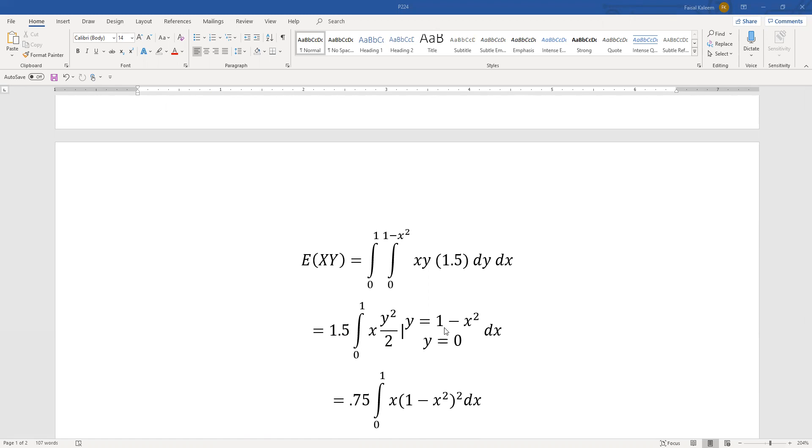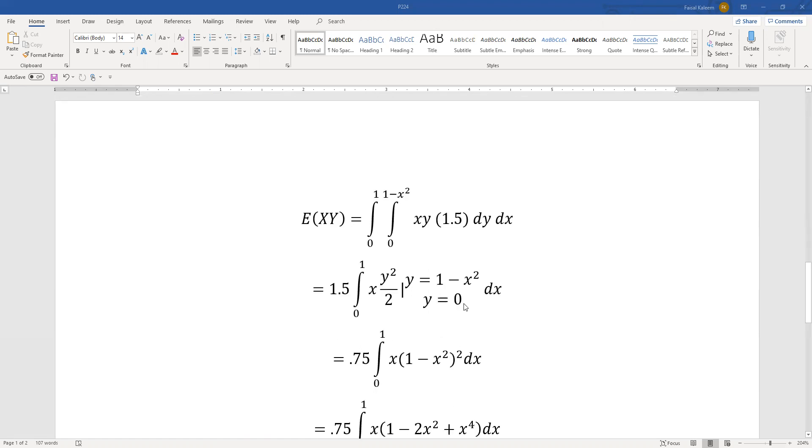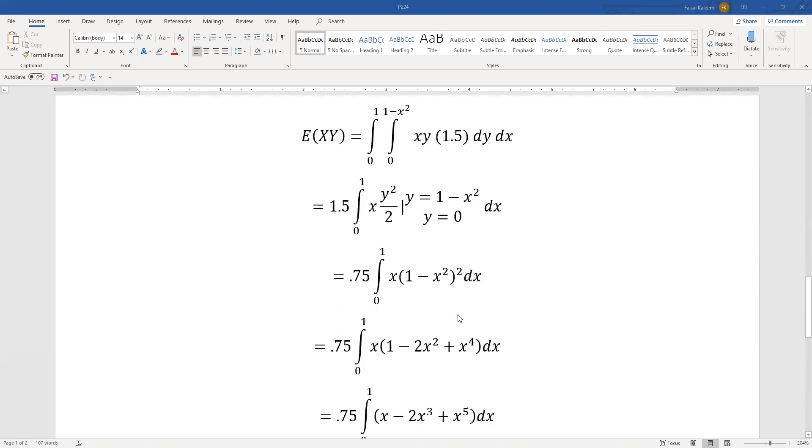Substitute the limits: x times 1 minus x squared whole squared because it's y squared over 2. This combines with 1.5 to give 0.75, the x stays outside, lower limit is 0. Then we open the square up, so we get 1 minus 2x squared plus x to the fourth, and then distribute this x.